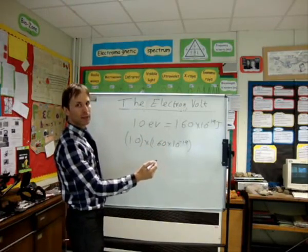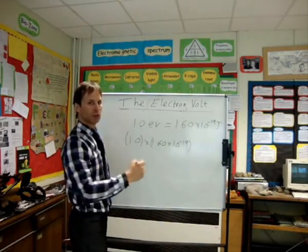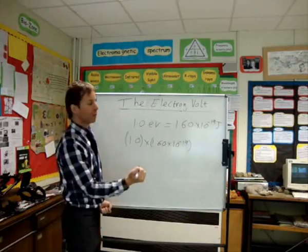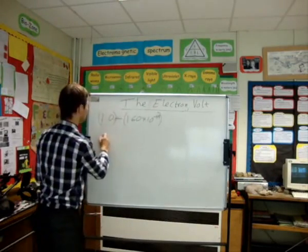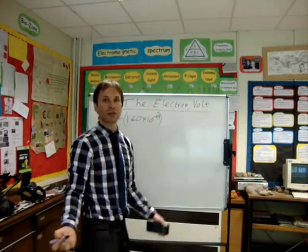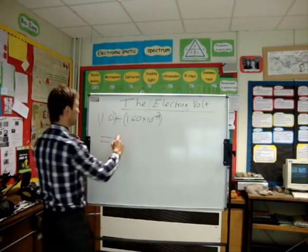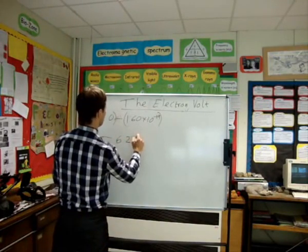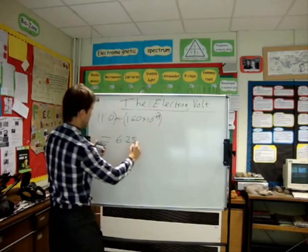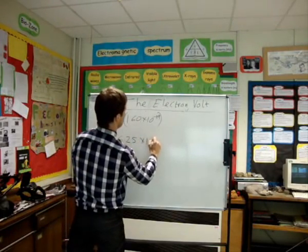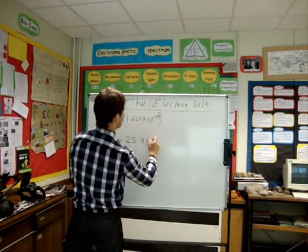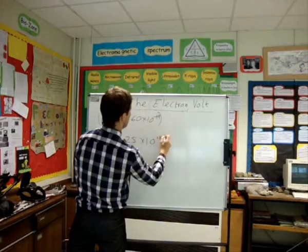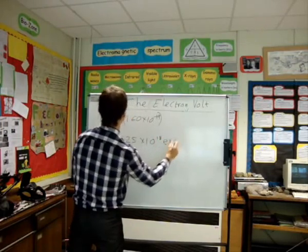So that means if I want to convert joules into electron volts, I have to go the opposite way around. Right, so what you should find out is that should equal 6.25 times 10 to the 18 electron volts.